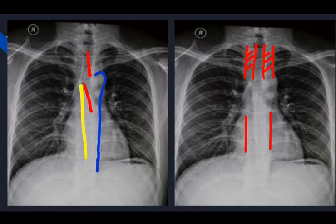Next we have to look for junctional lines and stripes. Junctional lines are points where the right and left lung borders meet — these are folds of pleura. There is an anterior junctional line, located in the midline and slightly inferiorly, and a posterior junctional line, located superiorly.